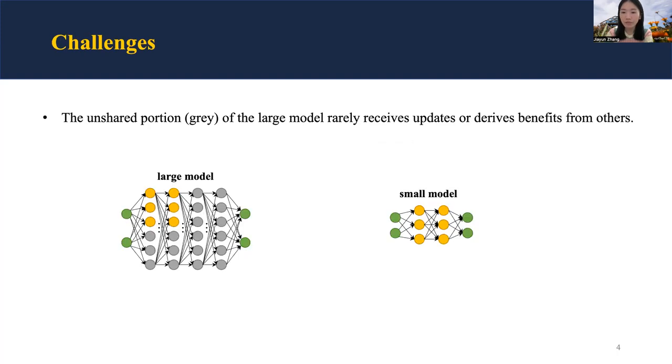This failure occurs because the learning system heavily leans on weak devices, while the unshared portion of the large model rarely receives updates or derives benefits from the small counterparts.